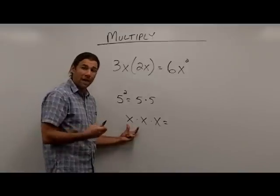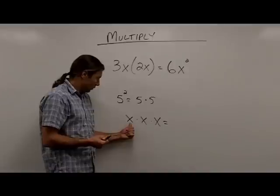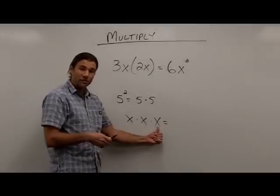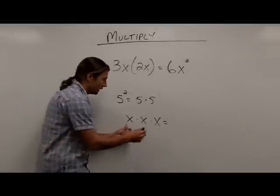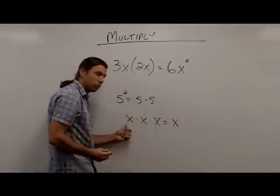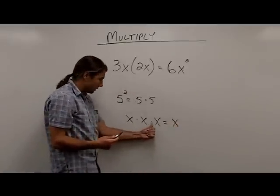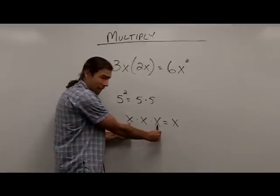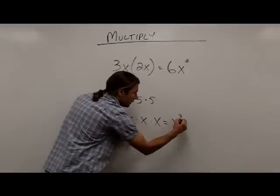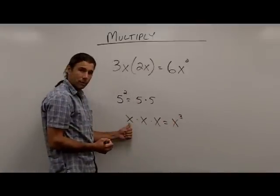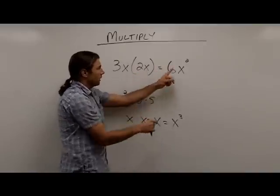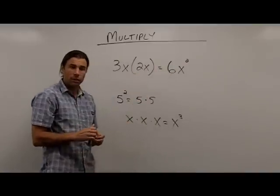So we could write this answer as x times x times x, or a simpler way of writing that is writing x and then placing an exponent on it to indicate how many times it's getting multiplied. So in this case, I have 1, 2, 3 factors getting multiplied together, so I would write x to the third power. And you can see that's how I get x times x gives me x to the second power when I multiply.